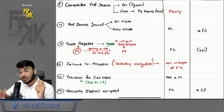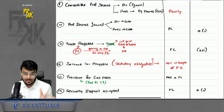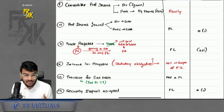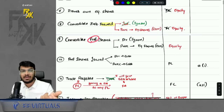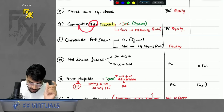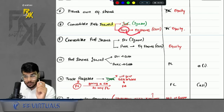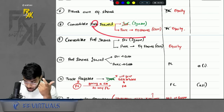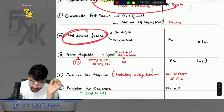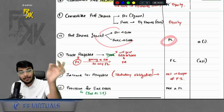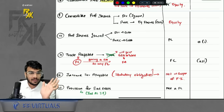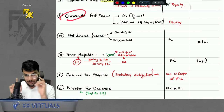What you studied in IPCC — that preference shares are equity and debentures are liability — is not always the case. As per IND AS, you must check substance over form: whether the instrument is convertible or redeemable. If a debenture is convertible, the principal is given in own equity shares, making it equity. If it is a normal redeemable preference share with cash repayment, it is a financial liability. It depends on whether the instrument is convertible or redeemable.